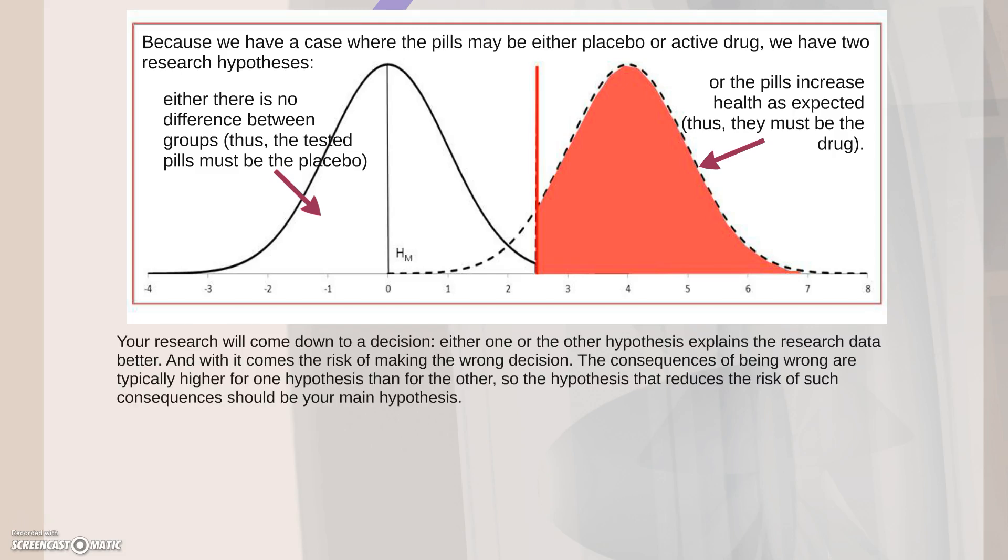Your research will come down to a decision, therefore. Either one or the other hypothesis explains the research data better. And with it comes the risk of making the wrong decision. The consequences of being wrong are typically higher for one hypothesis than for the other. So the hypothesis that reduces the risk of such consequences should be your main hypothesis.